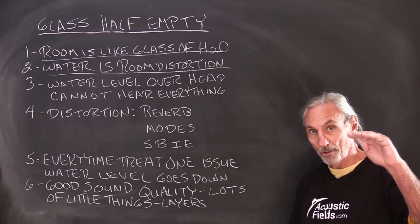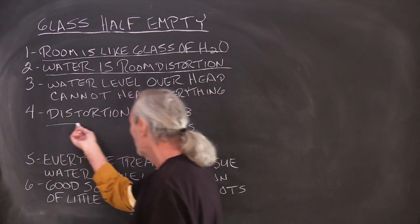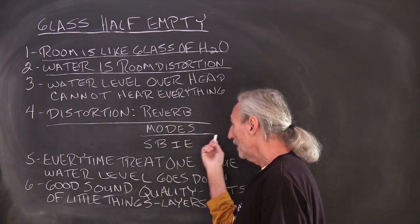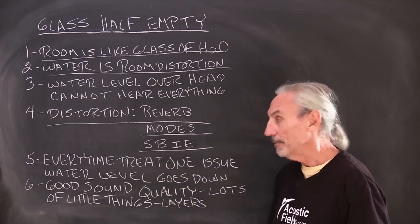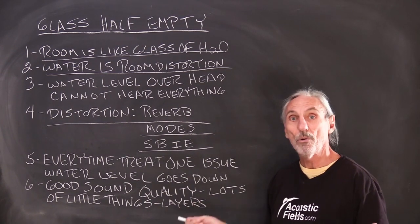So what do we have to do? We have to lower that water level. How do we do that? Well we first examine all the distortions that we have inside the room. We have reverb modes, speaker boundary interference effect, and a whole host of others.